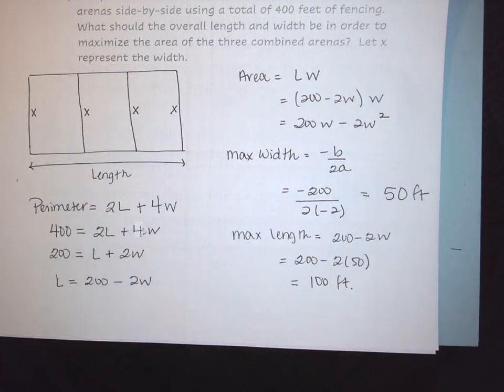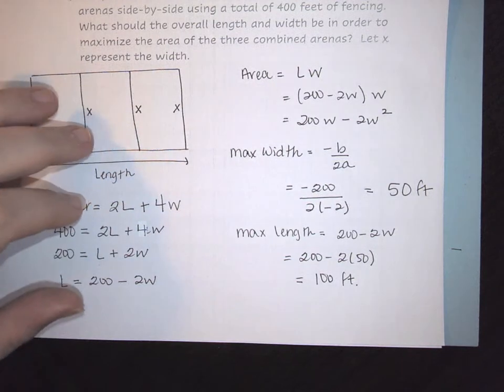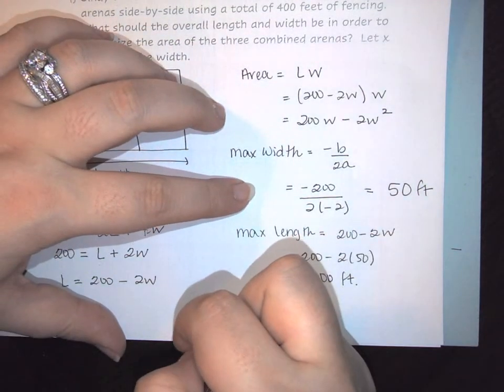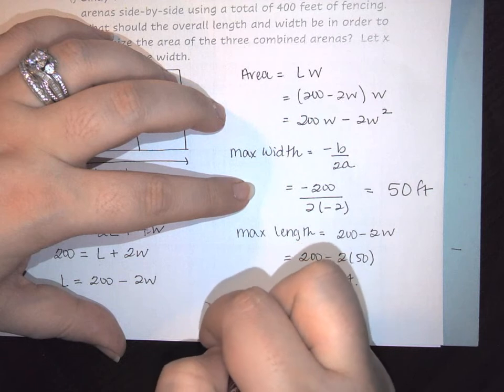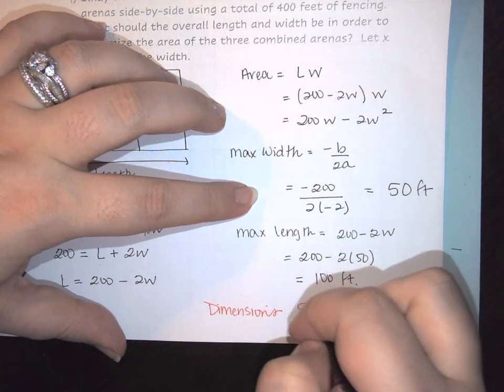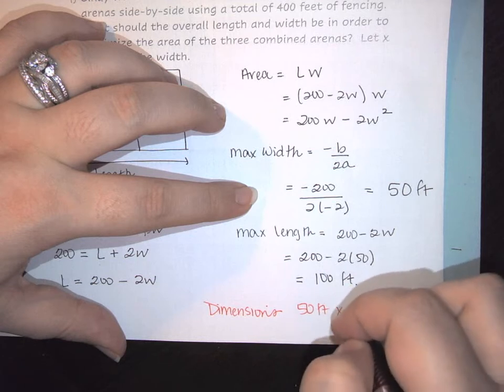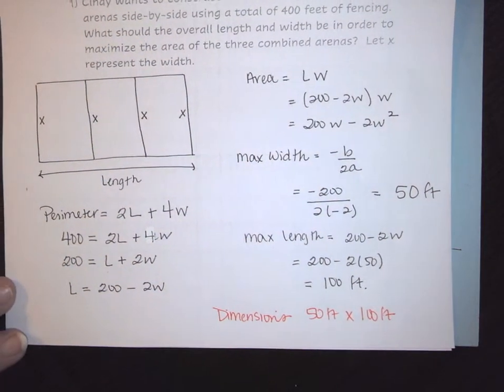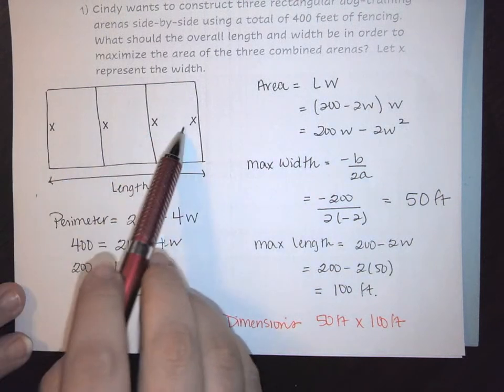So the dimensions that are needed to maximize the area is going to be 50 feet by 100 feet. And that is going to maximize the area of each individual pen.